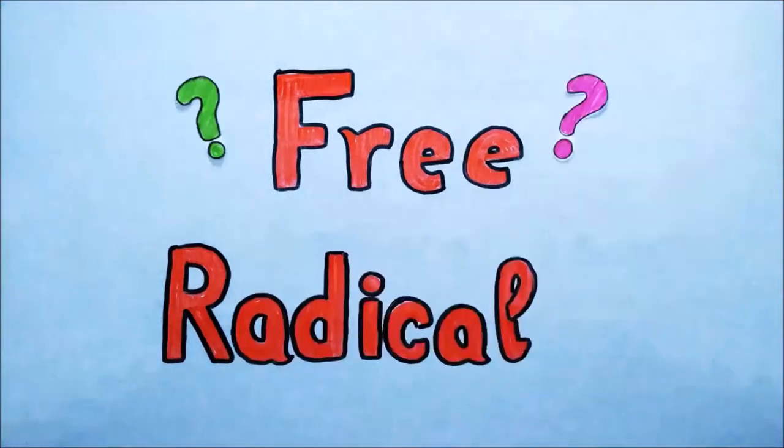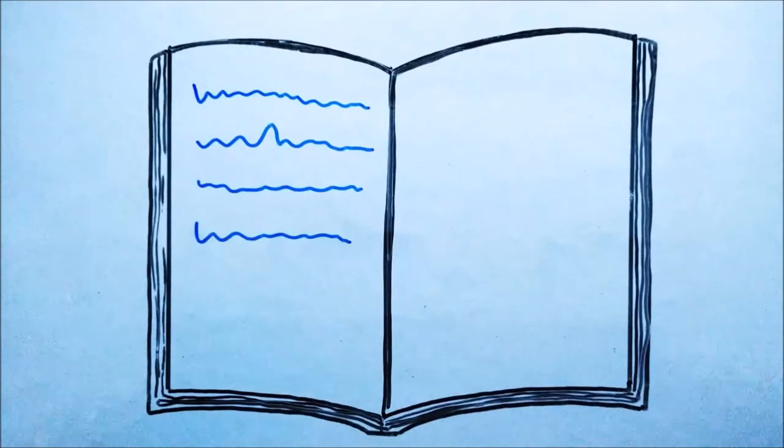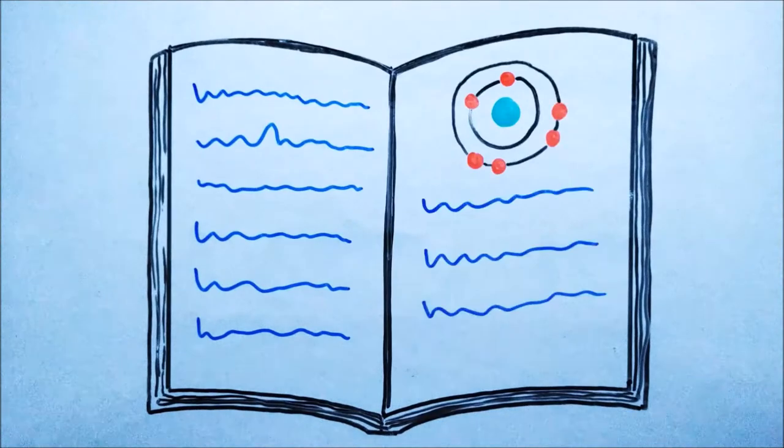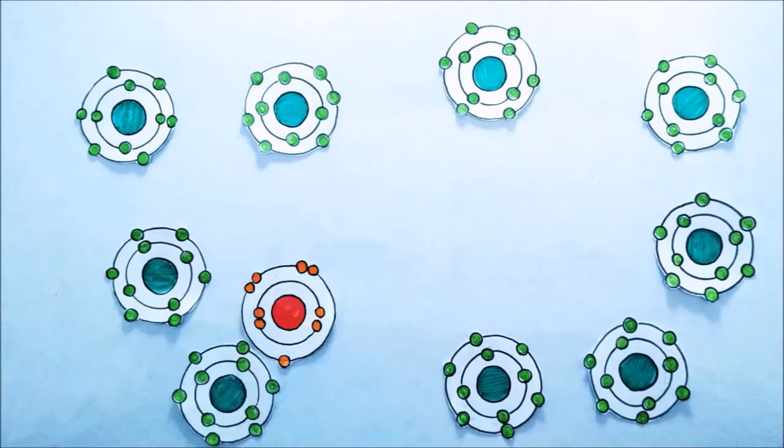So, what are free radicals? You must have read in your high school book that there should be paired electrons in outer orbital of any atom. And if there is unpaired electron in outer orbital, the atom becomes unstable.